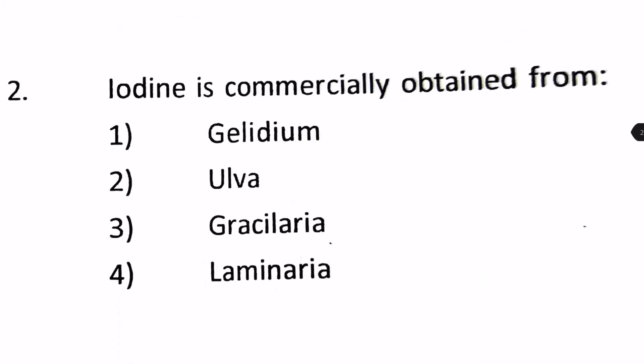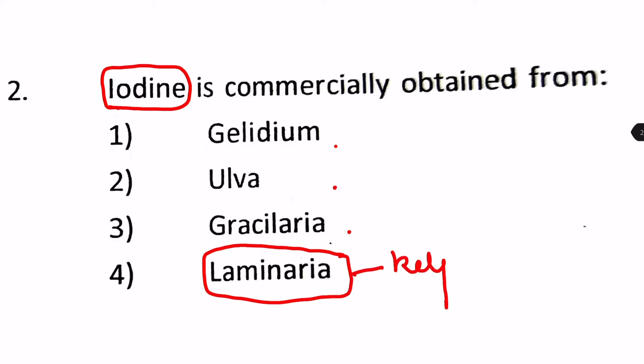Iodine is commercially obtained from which organism? Options are Gelidium, Ulva, Gracilaria, and Laminaria. Focusing on iodine, which is found in salt from sea waters — among the options, Laminaria is found in marine conditions as kelps. The fact is that Laminaria is a very rich source of iodine. So the answer is number 4, Laminaria.